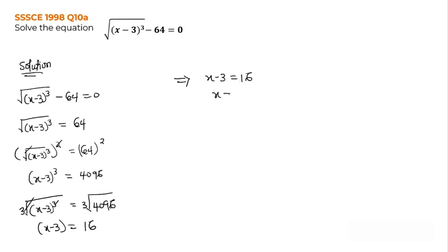So x equals, I have 16 here. I send the negative 3 to the other side of the equal sign so I have my x stand alone. So it becomes plus 3. So x equals 19. x equals 19 is our answer.